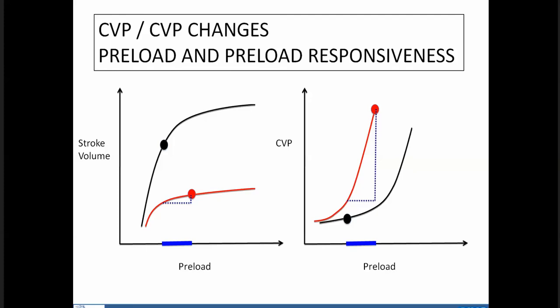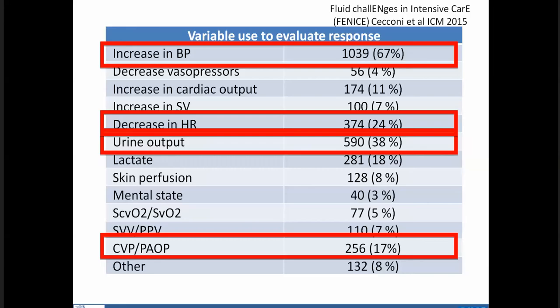Delta changes in CVP work completely in the opposite direction, so they cannot be used to titrate cardiac output response. Absolute CVP values cannot predict fluid response, and delta CVP changes are counterproductive as a titration guide.